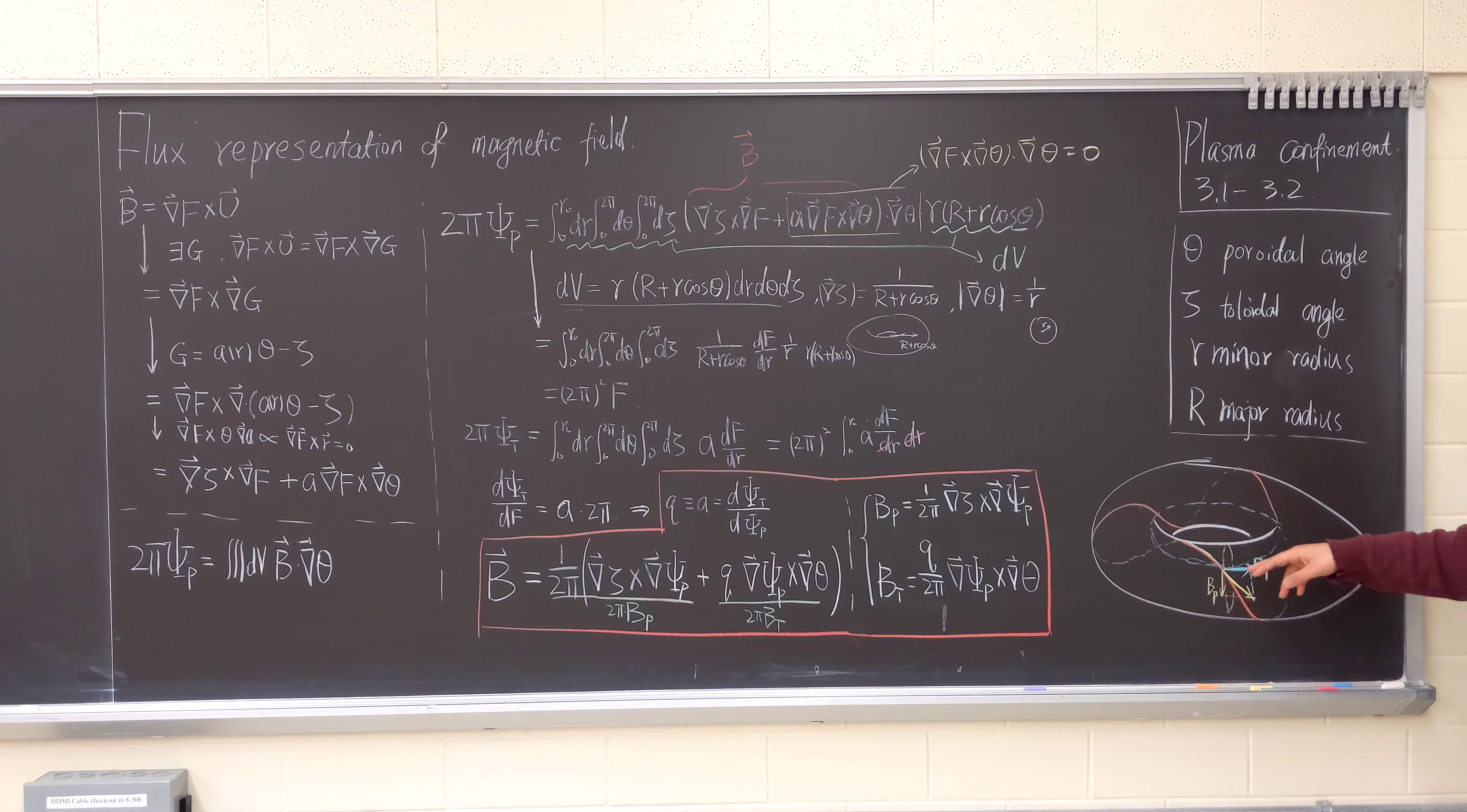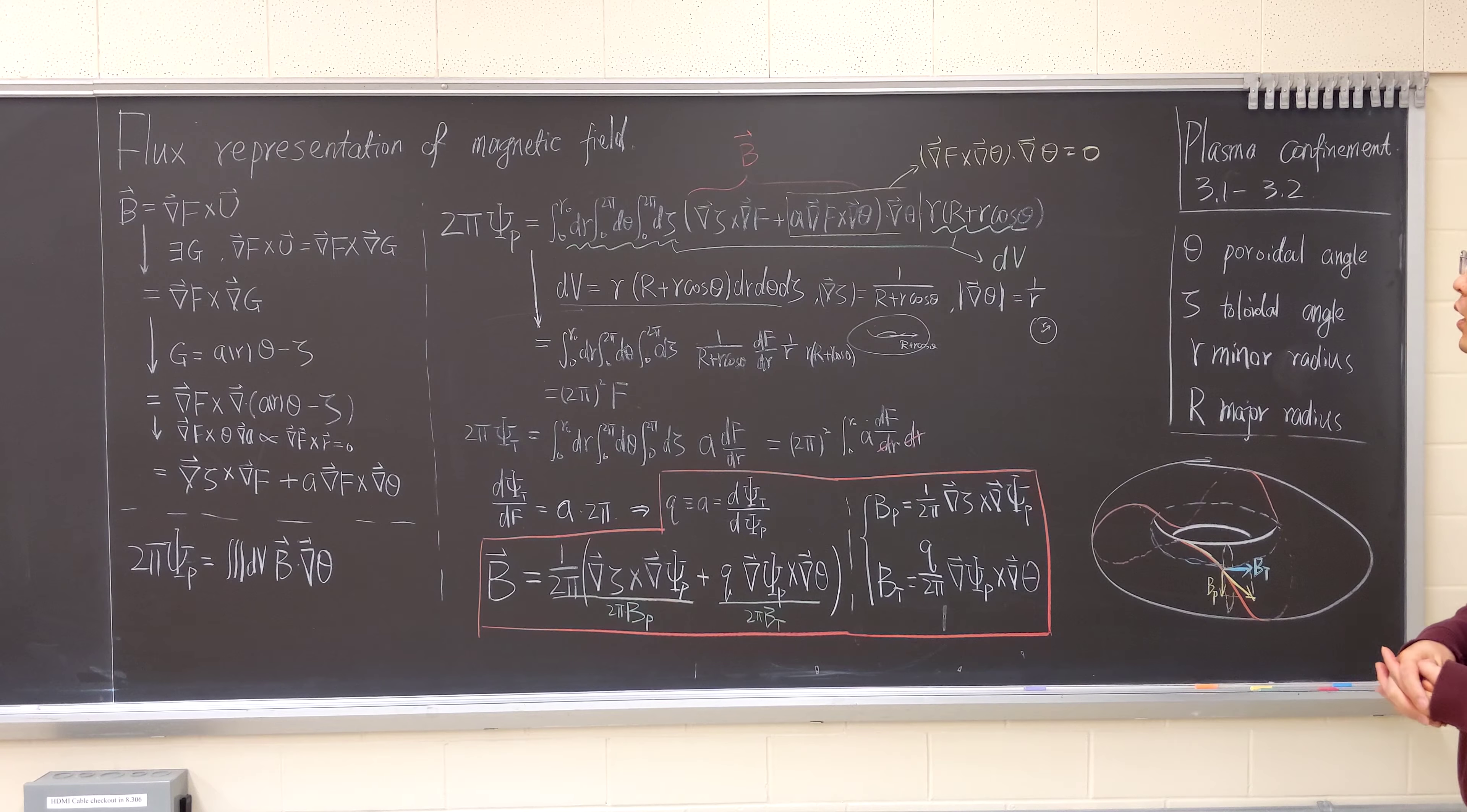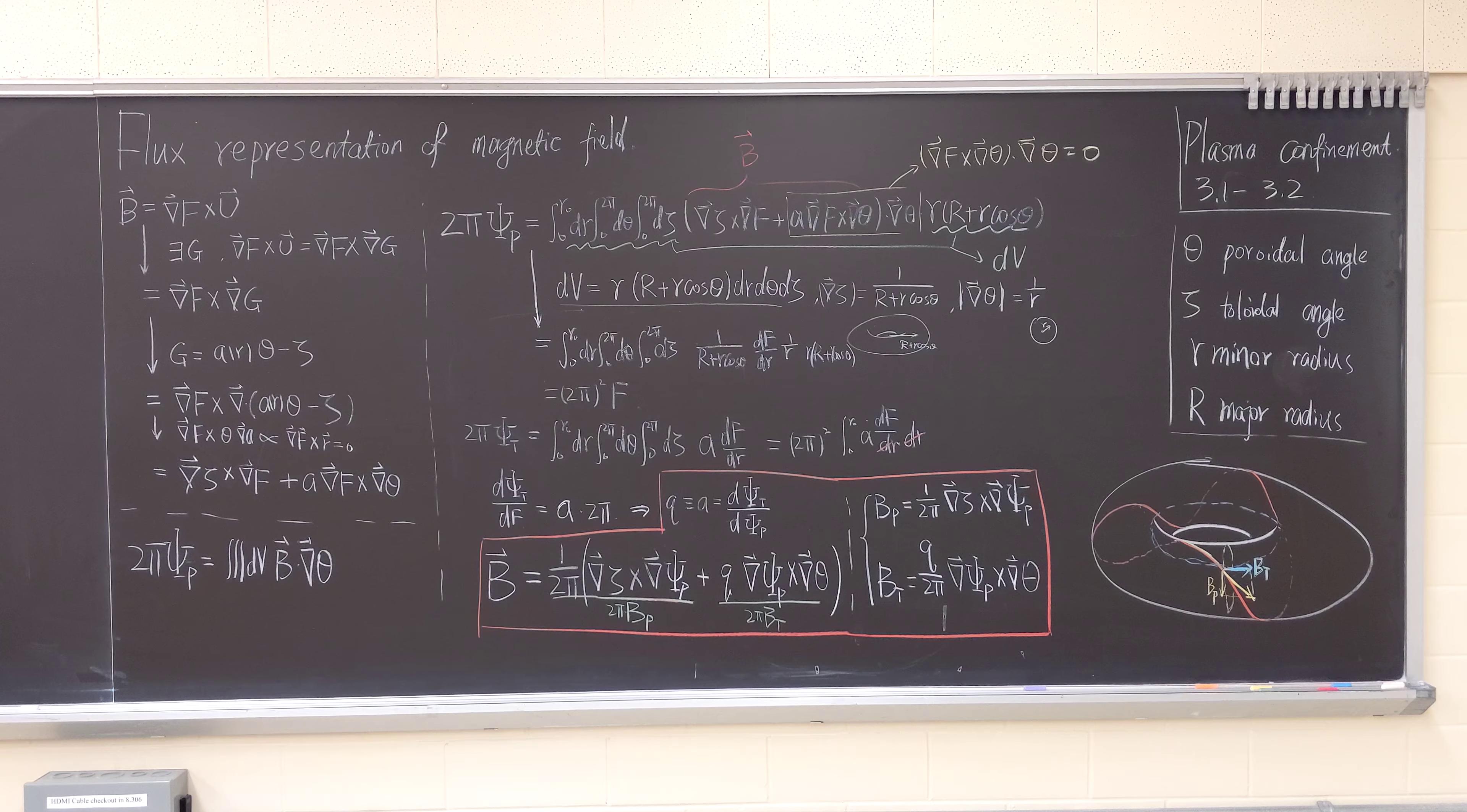Putting this into the torus, the red line is the magnetic field line. We trace one of the magnetic field lines and decompose it into poloidal, which is around the donut in this small cross section. And the toroidal is around the circle of the donut. This is the flux representation of a magnetic field.